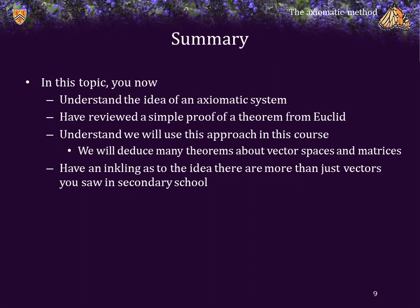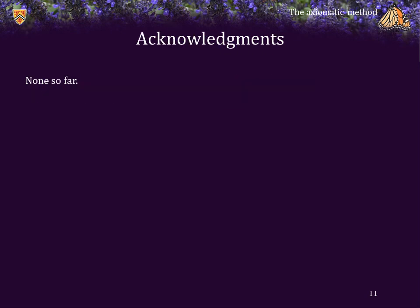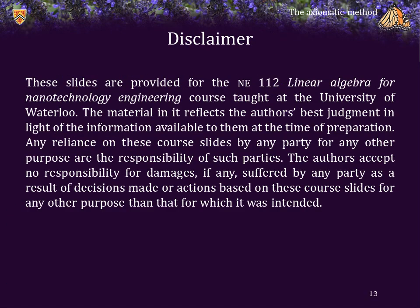Following this topic, you now understand the idea of an axiomatic system. You have reviewed a simple proof of a theorem from Euclid's Elements. You understand that we will use this approach in this course to deduce many theorems about vector spaces, matrices, and linear transformations. And you have an inkling that there are more than just the two- and three-dimensional vectors you saw in secondary school.